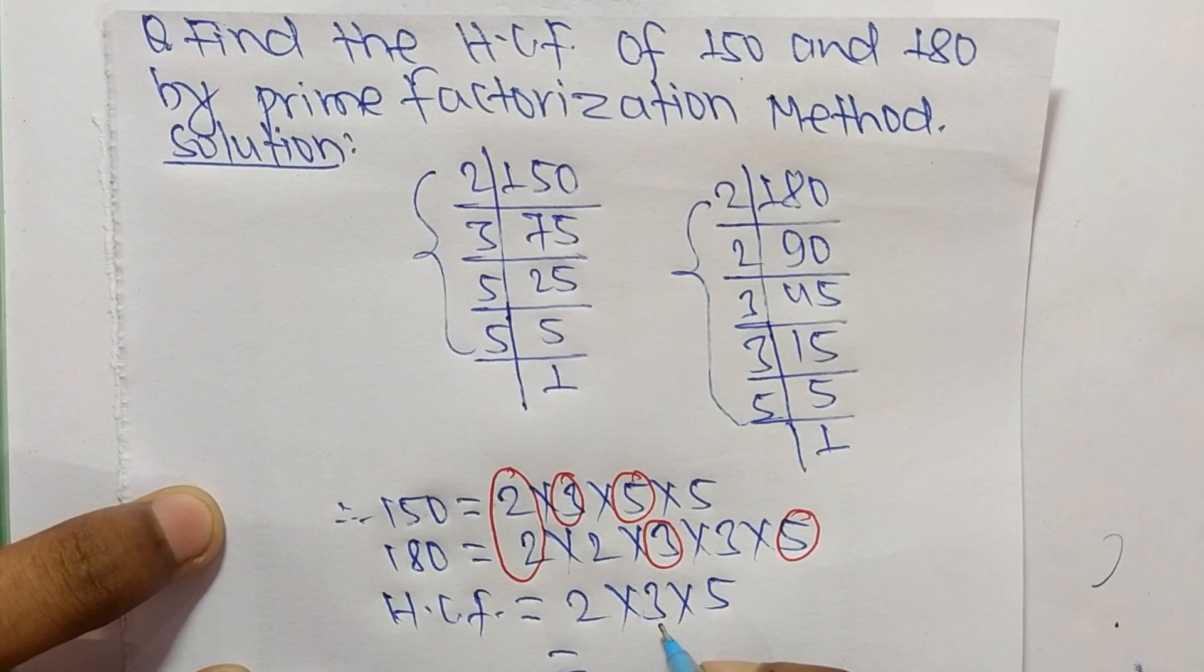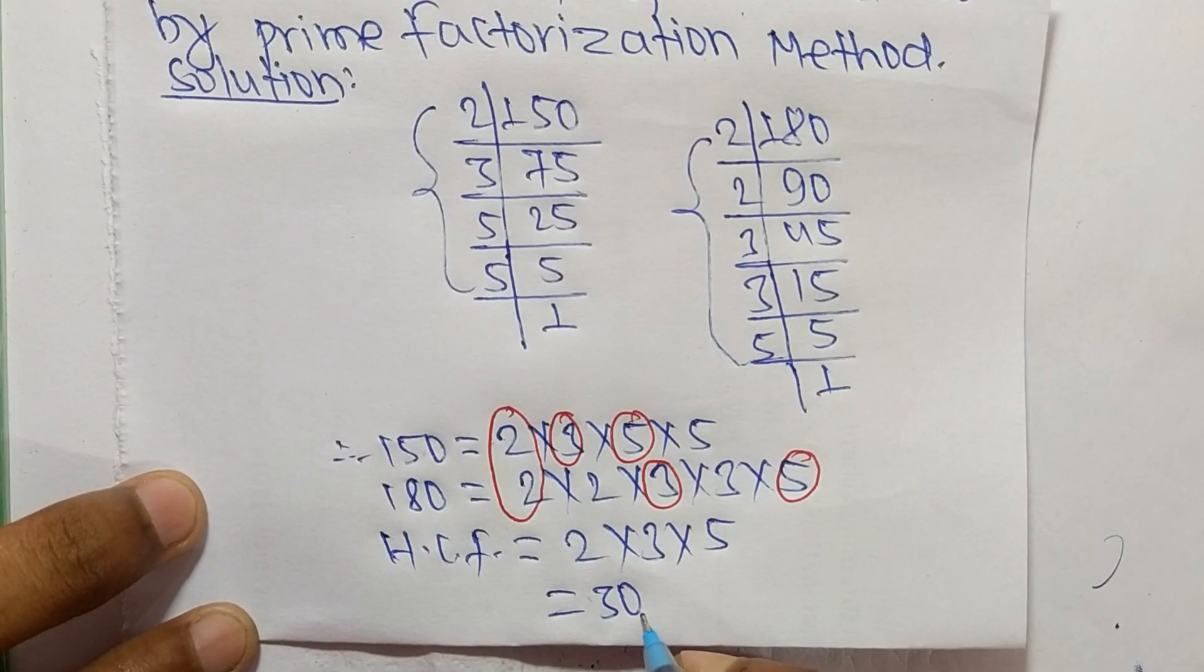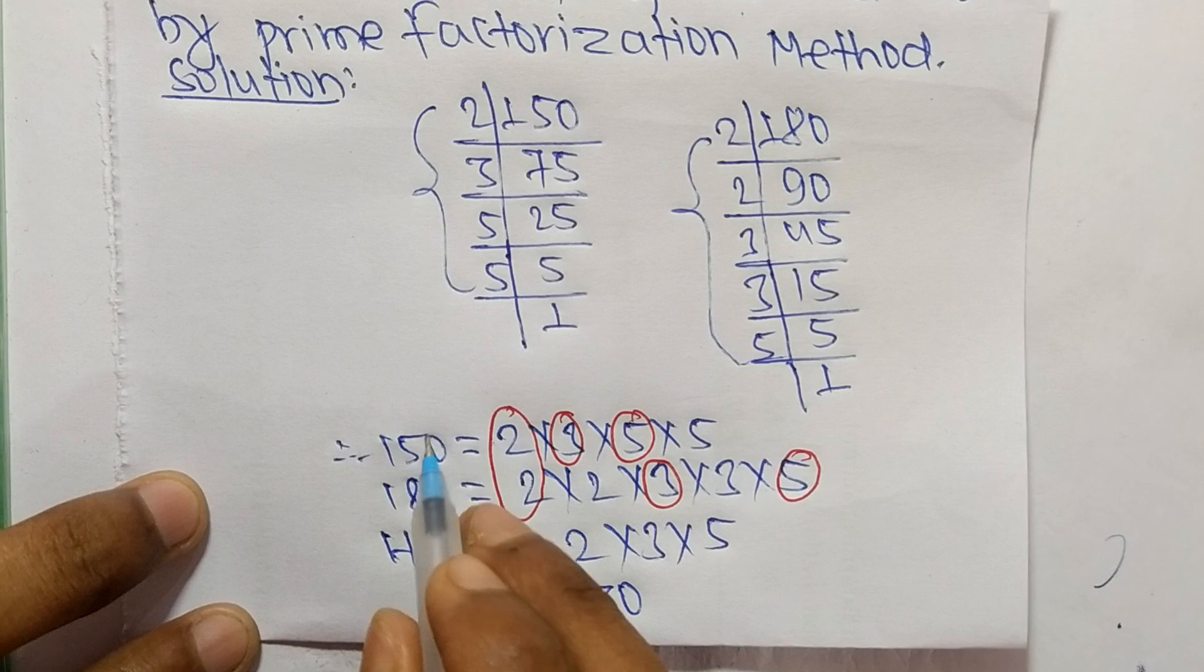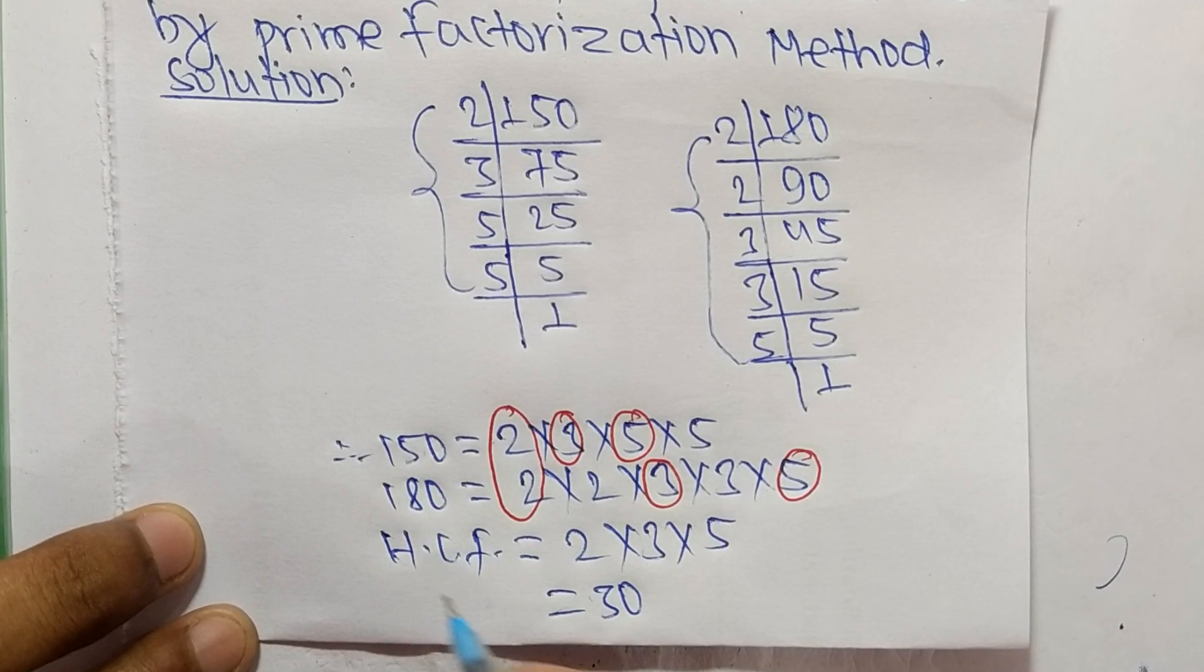So 30 is the HCF of 150 and 180. That's all for today, thanks for watching.